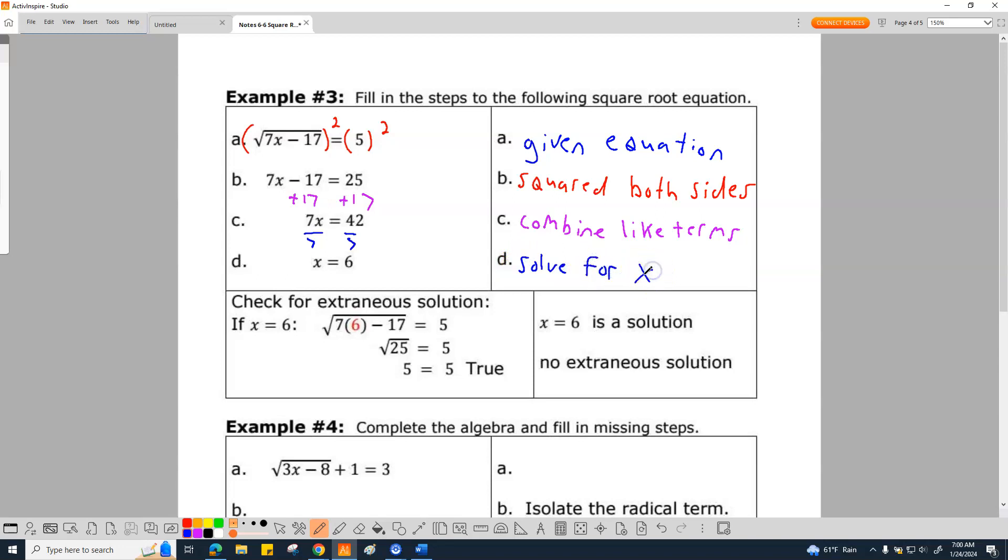Now, you have to go back and plug this solution in. You have to go check it. And look what happens when we get it. We end up getting 7 times 6 minus 17 plugged in, which gives us 42 minus 17, which is 25. The good news for us is the square root of 25 is equal to 5. So, does 5 equal 5? Yes. That is true. Boom. Done with that example.